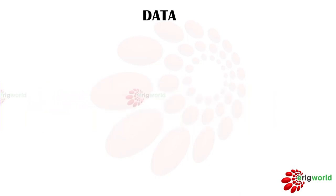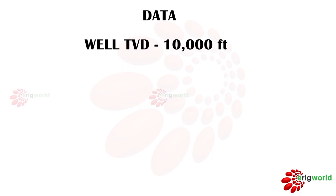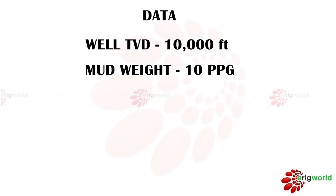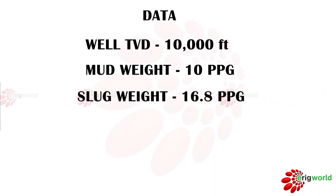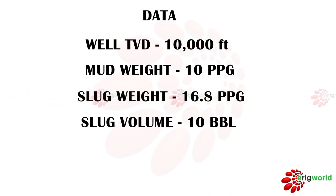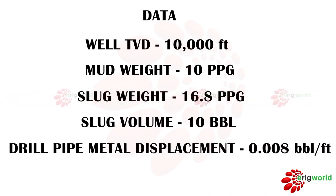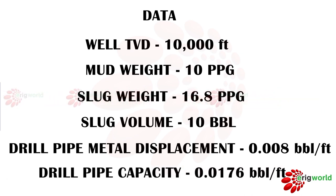Given data: TVD 10,000 feet, mud weight 10 ppg, slug weight 16.8 ppg, slug volume 10 barrels, drill pipe metal displacement 0.008 barrel per foot, drill pipe capacity 0.0176 barrel per foot.